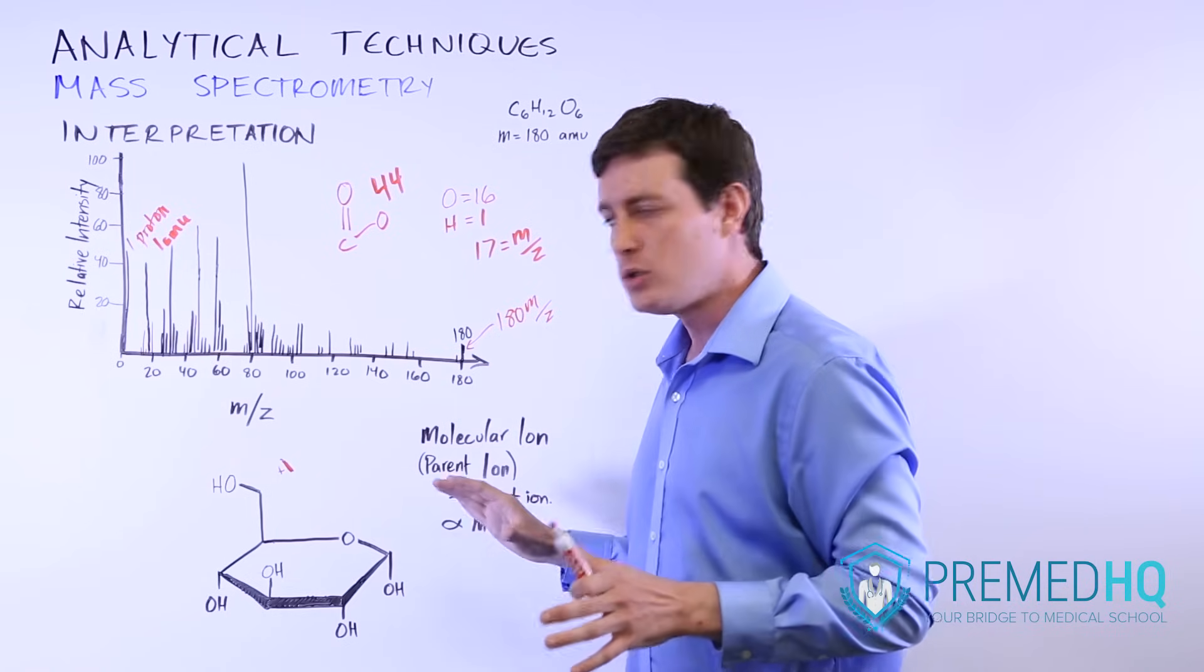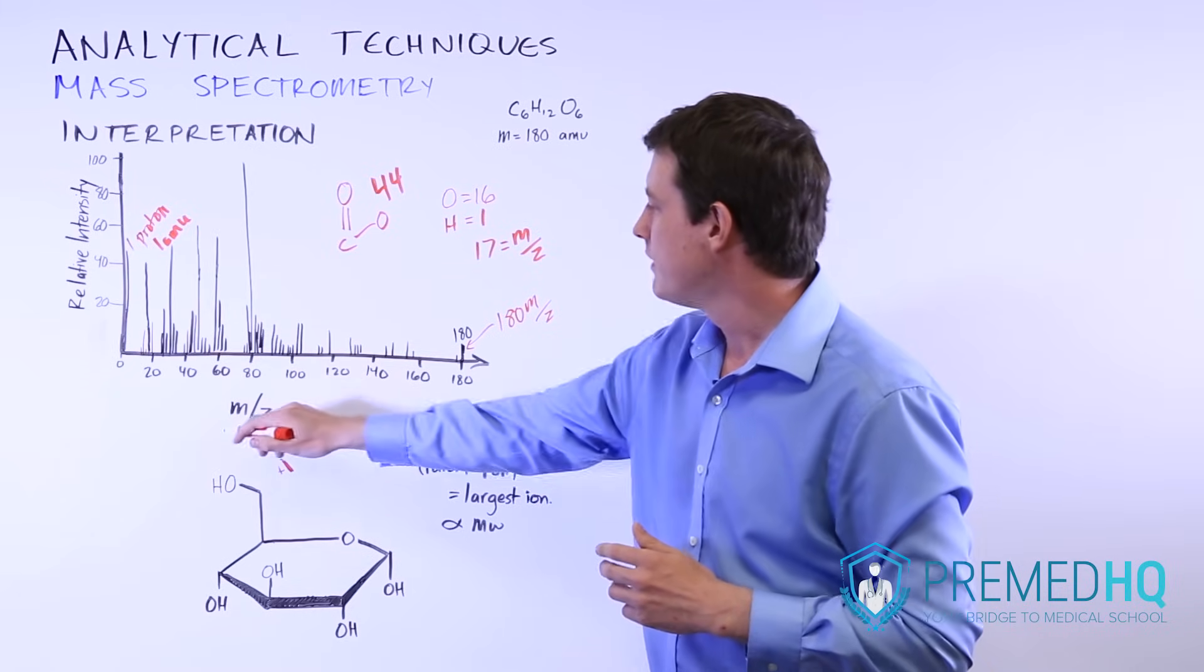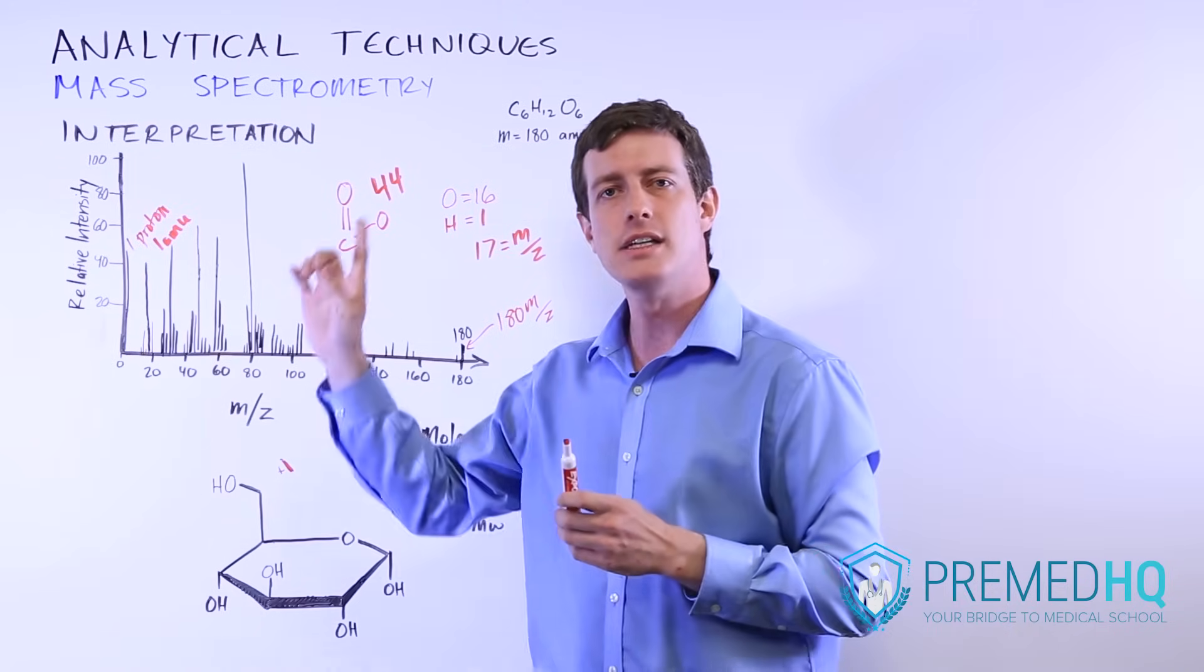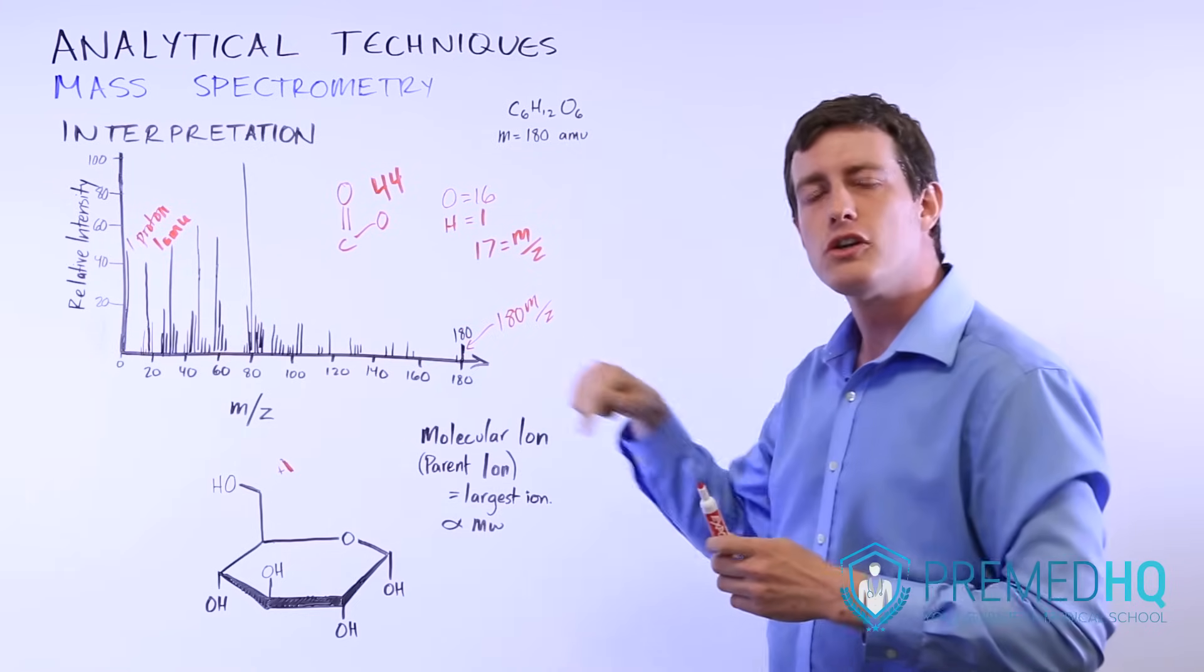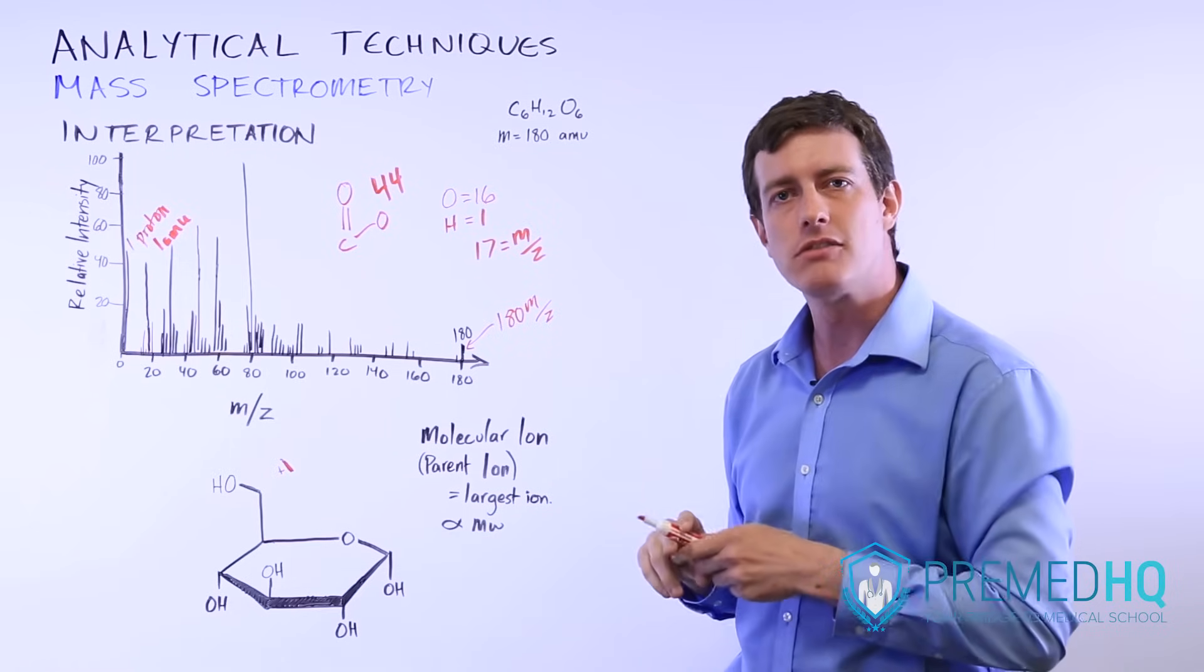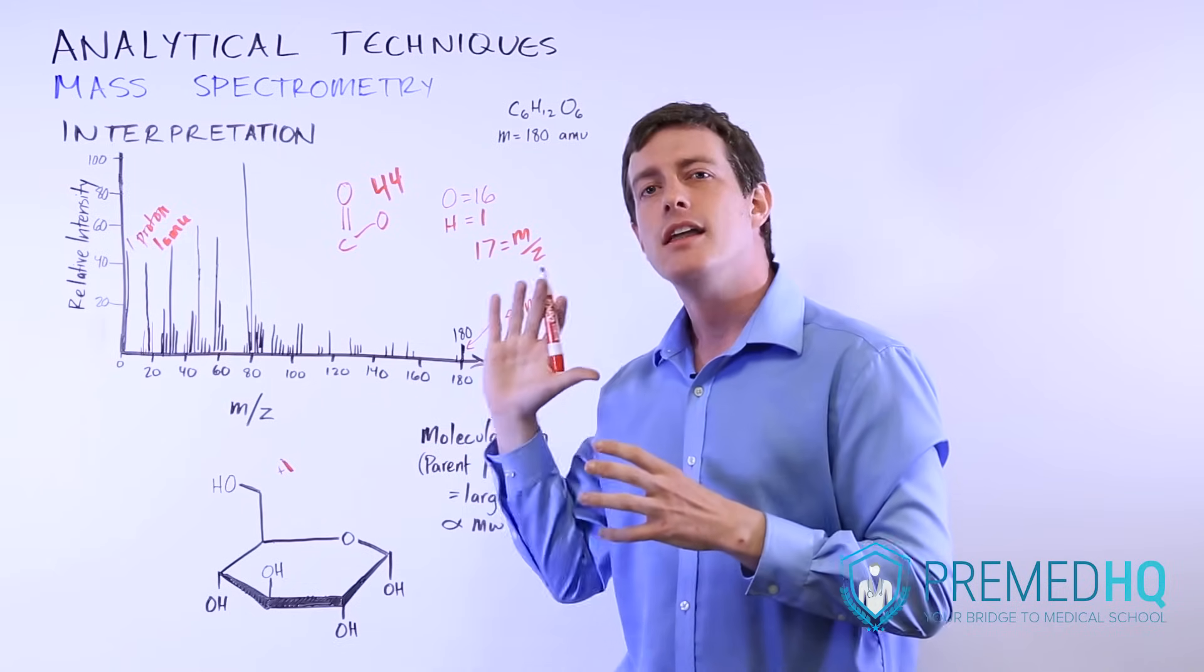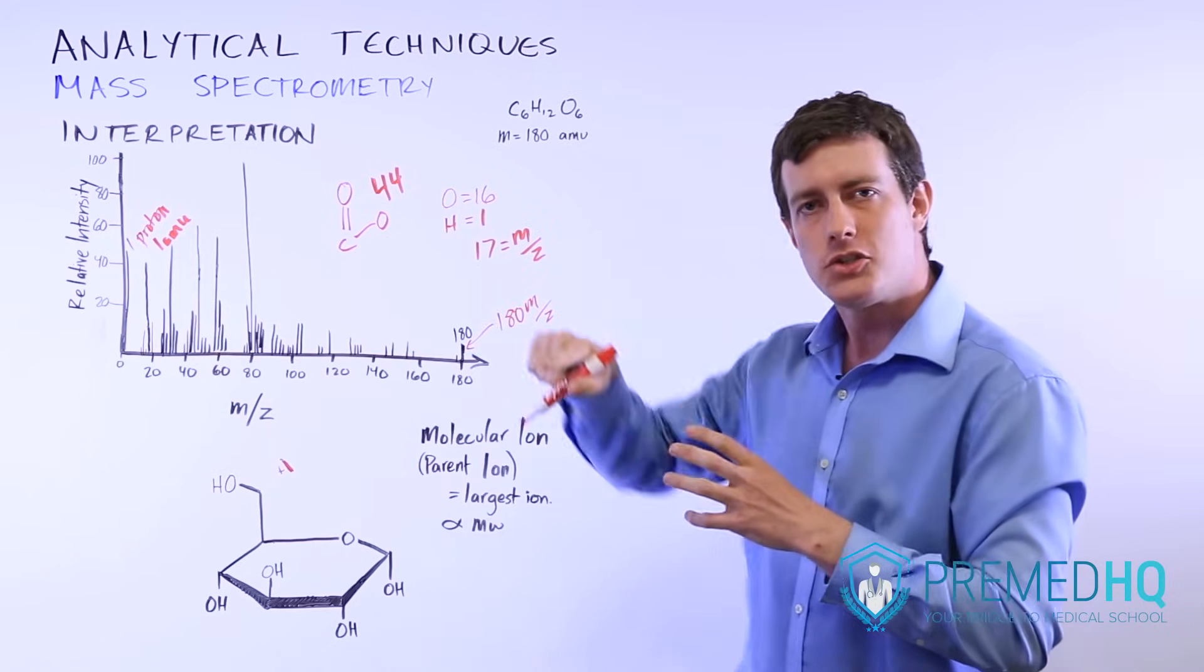Then you should probably know the significance of the mass to charge ratio, remembering that this is a function of how strong the magnetic field needed to be in order to produce a force that curved that cation around the path and let it hit the receiver. Remember that the larger or more massive that cation is, the more magnetic field strength was required to accelerate it around that path.